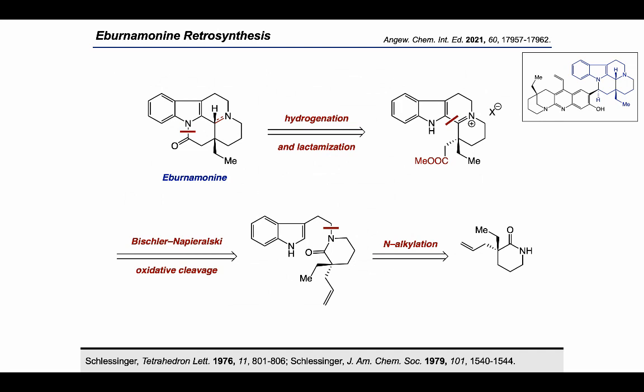With the building block in hand, we first focused on the synthesis of Ibernamonine, the eastern fragment of the target. Retrosynthetically, we planned to adapt chemistry reported by Schlesinger and co-workers, in which Ibernamonine was accessed through hydrogenation and lactamization of an iminium intermediate. This tetracyclic iminium species can be constructed via Bischler–Napieralski cyclization, and we envisioned installing the indole through N-alkylation of the quaternary lactam.